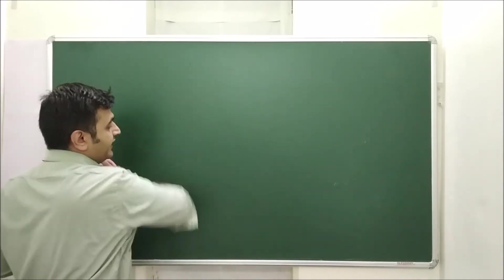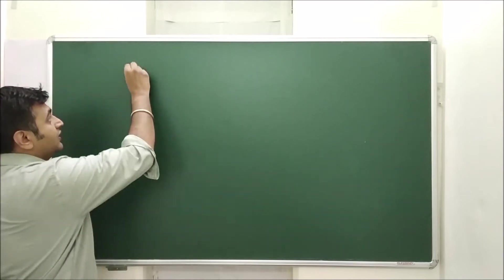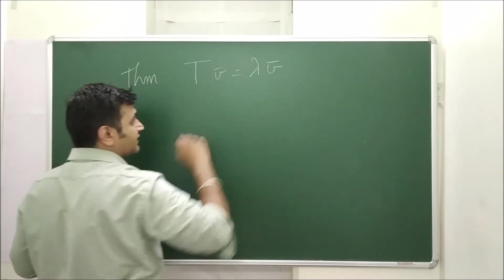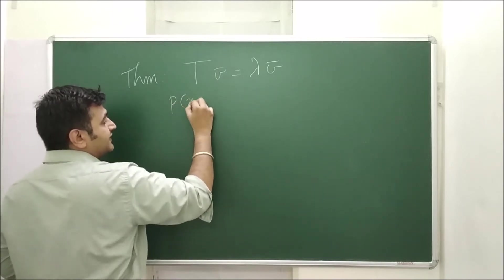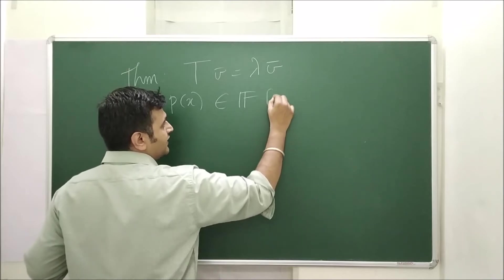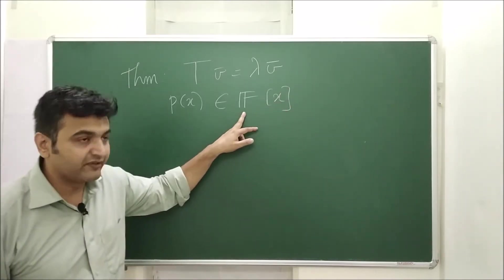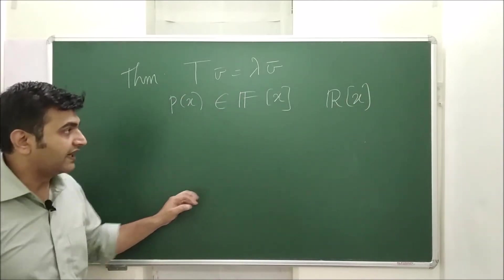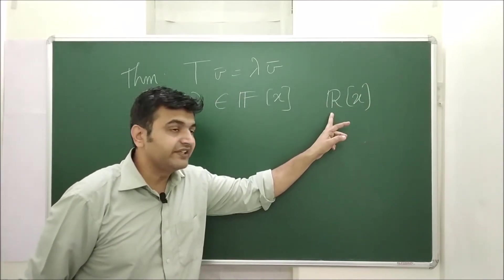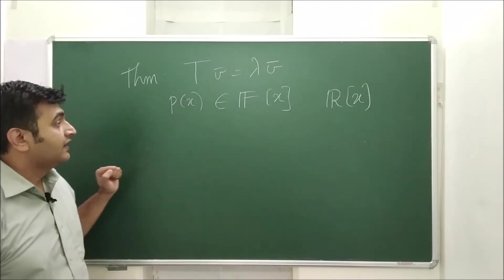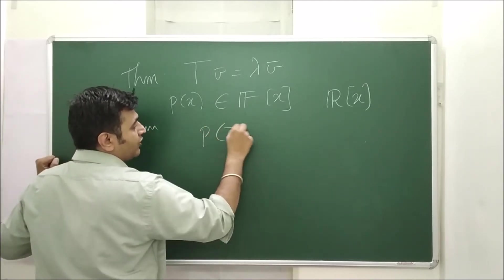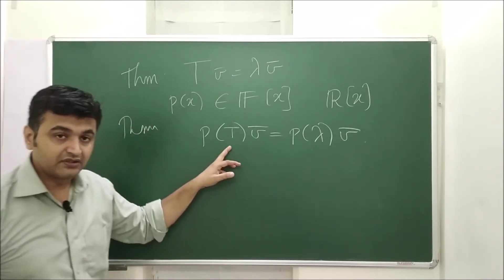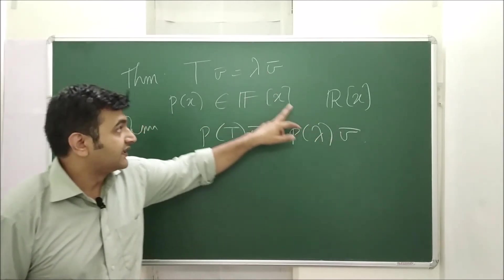Now the theorem: if T is a linear operator, v̄ is an eigenvector with corresponding eigenvalue λ, and P(X) is any polynomial over a field F (coefficients from real or complex numbers), then P(T) applied to v̄ equals P(λ)·v̄. So the eigenvector remains the same, but the eigenvalue becomes P(λ).